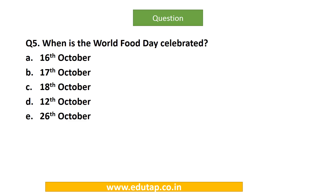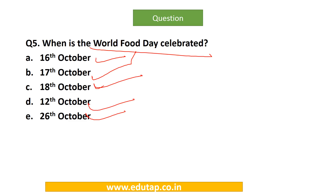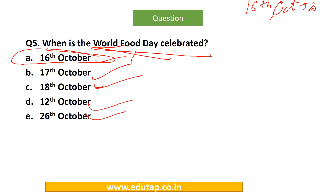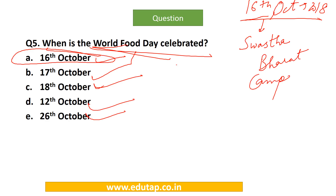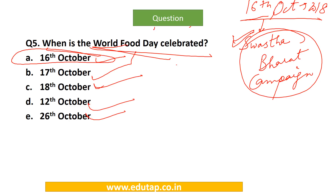MCQ: When is World Food Day celebrated — 16th October, 17th October, 18th October, 12th October, or 26th October? The correct answer is 16th of October. On 16th October 2018, the union government of India launched the Swasth Bharat national campaign — not Swachh, but Swasth Bharat. It is an all-India cycling rally to make people aware of the need to eat healthy food and for consumer awakening regarding food adulteration.